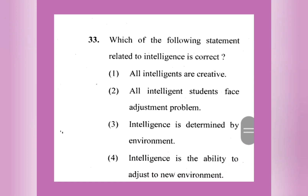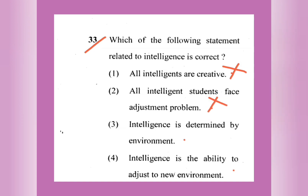Question number 33: Which statement related to intelligence is correct? Are all intelligent people creative? No — all may not be creative. Do all intelligent students face adjustment problems? No. Is intelligence determined by environment? No. Intelligence is the ability to adjust to the new environment — wherever you are, you have to adjust. That is the right answer — option number 4.